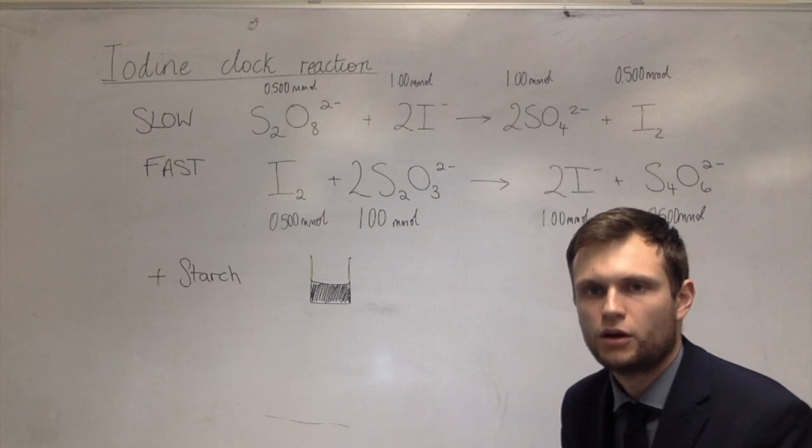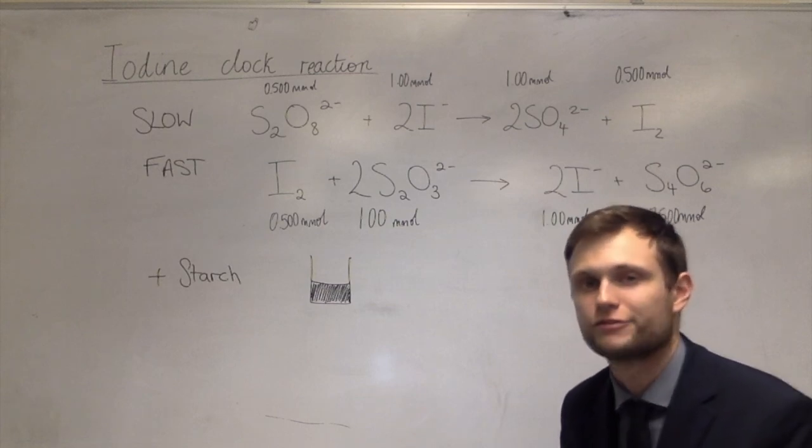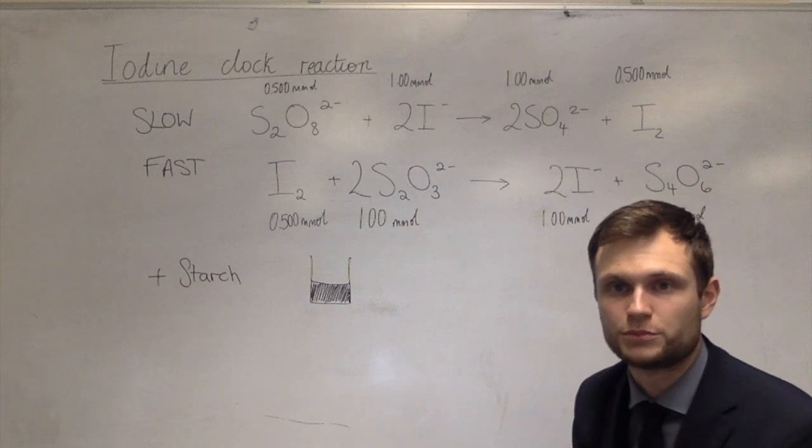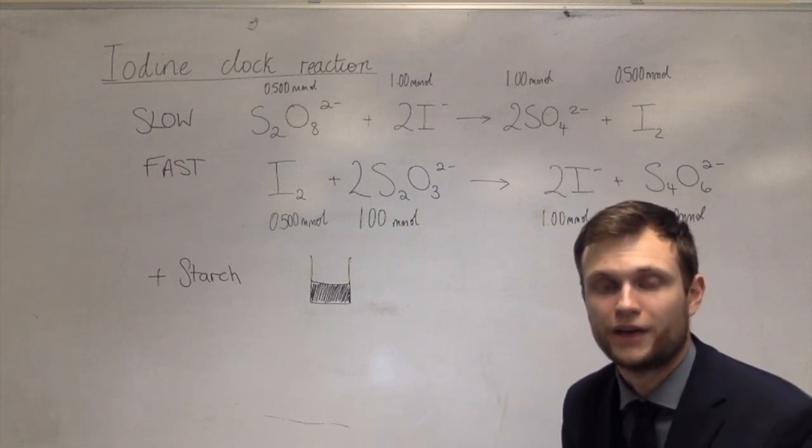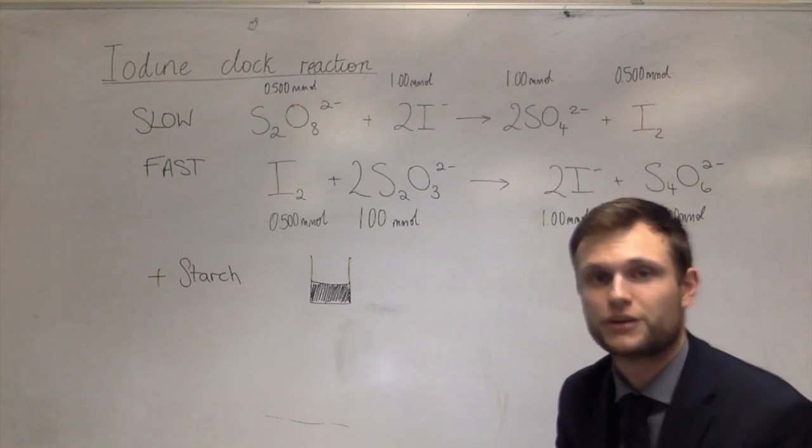So what was the point of all that? Well, the idea here is to calculate the rate. We can quite easily calculate the average rate of the first reaction now. Because all we need to do is divide the amount of iodine made by the total volume of the solution and then divide that by the time it took to suddenly go black and you've calculated rate.